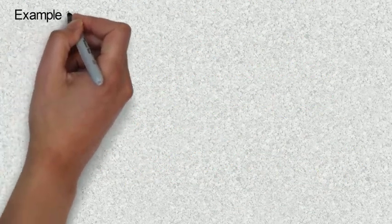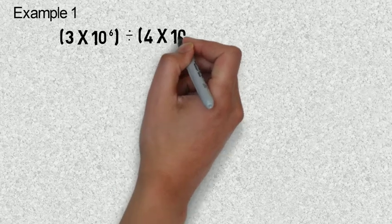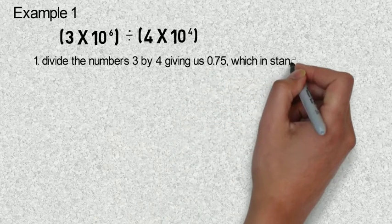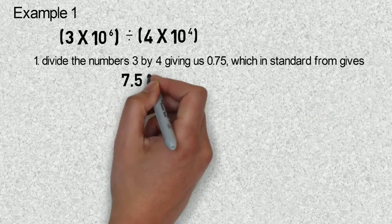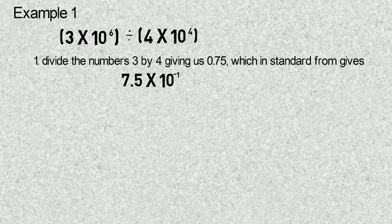Let's solve the following question. Example one: three times ten raised to power six, divided by four times ten raised to power four. We first divide our normal numbers three and four. Dividing three by four gives us zero point seven five, which in standard form is written as seven point five times ten raised to power minus one. Our decimal point is moving from the front of zero to the front of five, moving from left to right, which gives us negative — that is how we arrive at ten raised to power minus one.